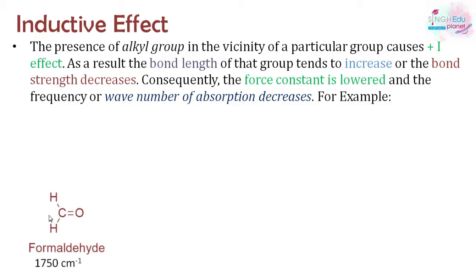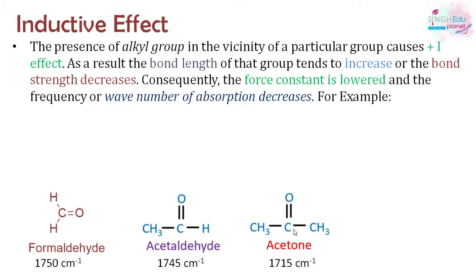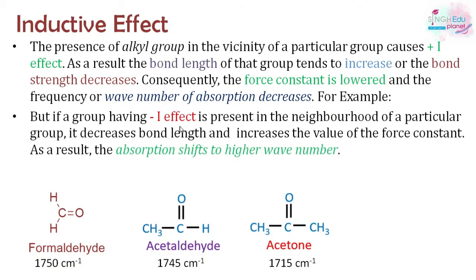For example, in formaldehyde there is no alkyl group, but when an alkyl group is attached it acts as an electron donor, increasing bond length and reducing the force constant — the wavenumber decreases by about 5 cm⁻¹. With two alkyl groups the electron-donating effect is stronger, the force constant is further reduced, and the wavenumber decreases further to about 1715 cm⁻¹. On the other hand, with a −I (negative inductive) effect from an electron-withdrawing group, bond length decreases, bond strength increases, the force constant increases, and the wavenumber increases.